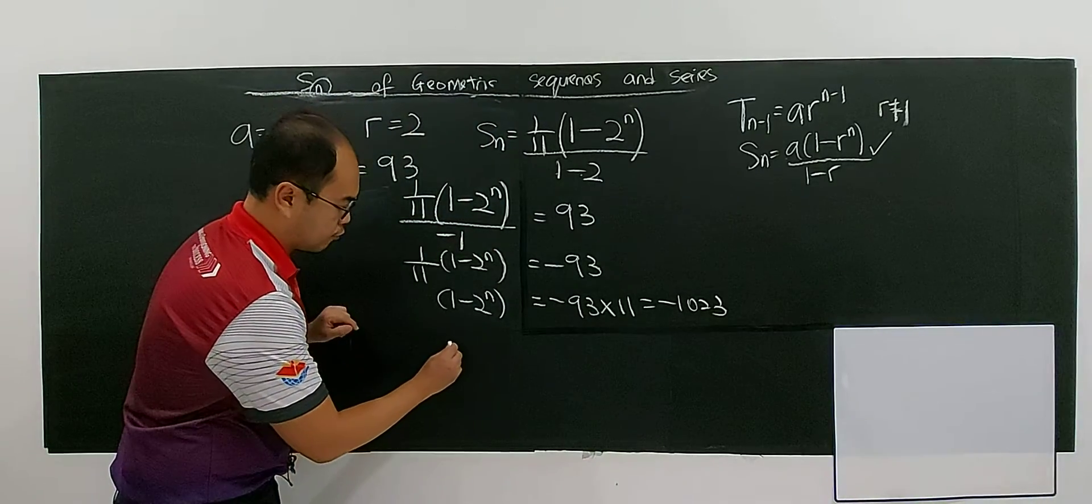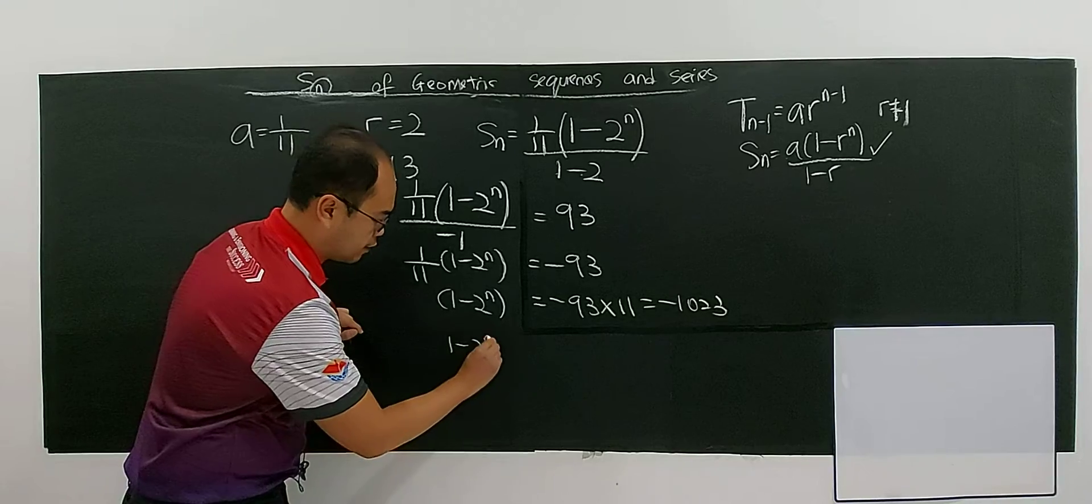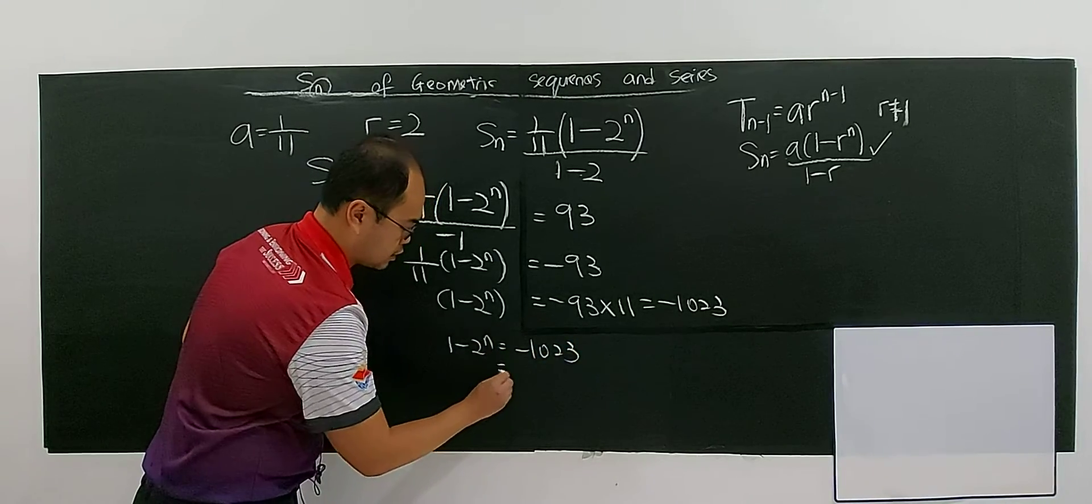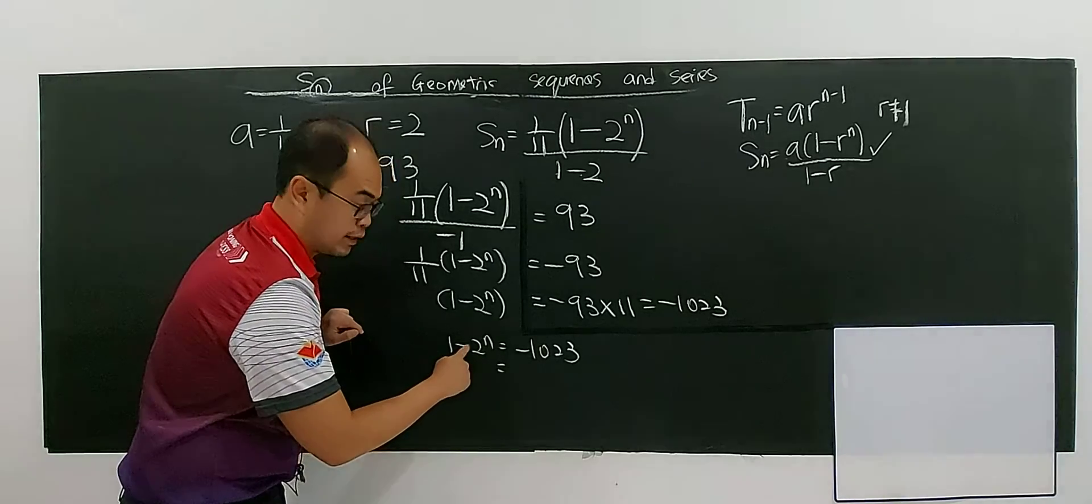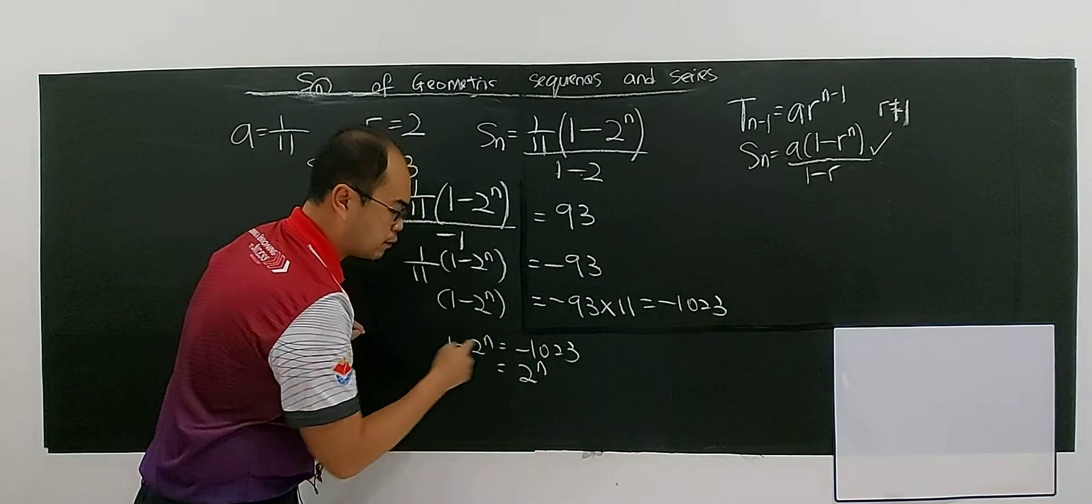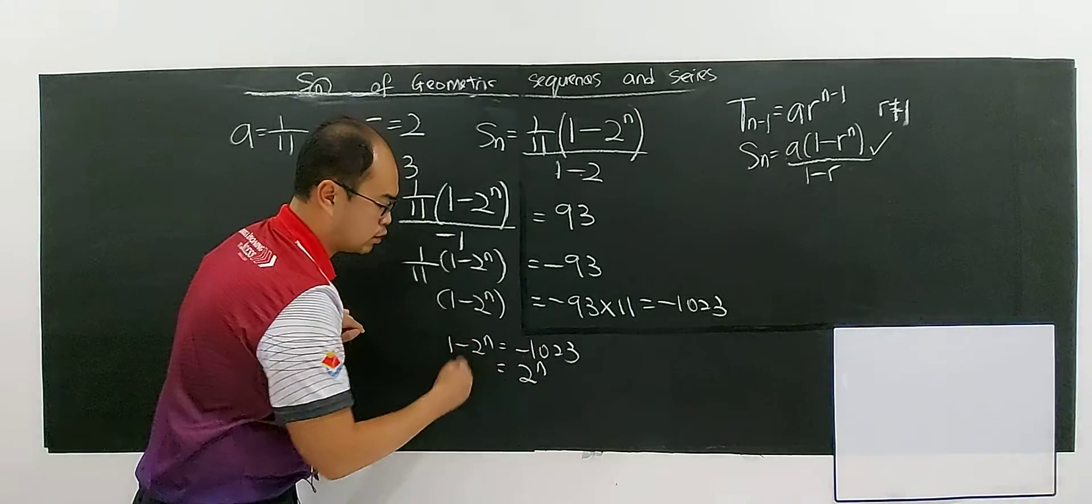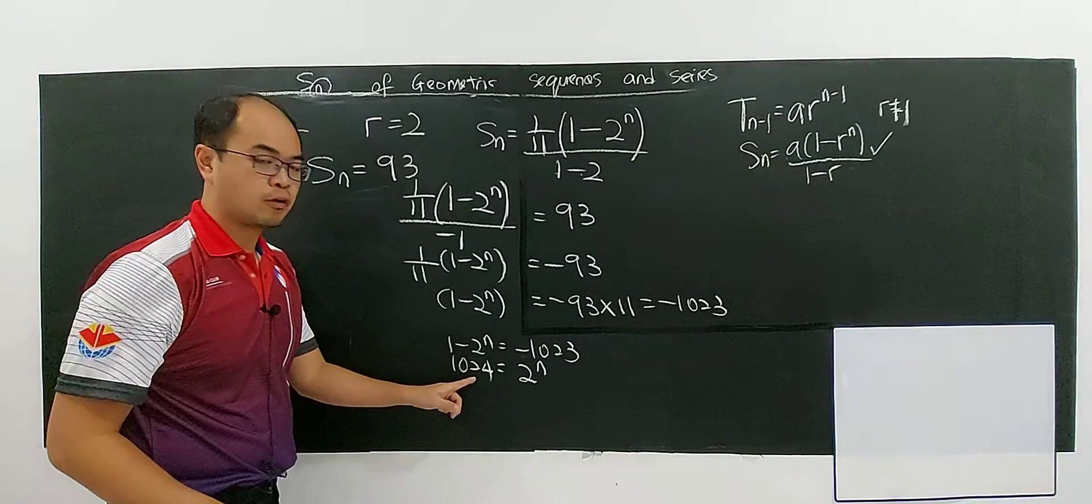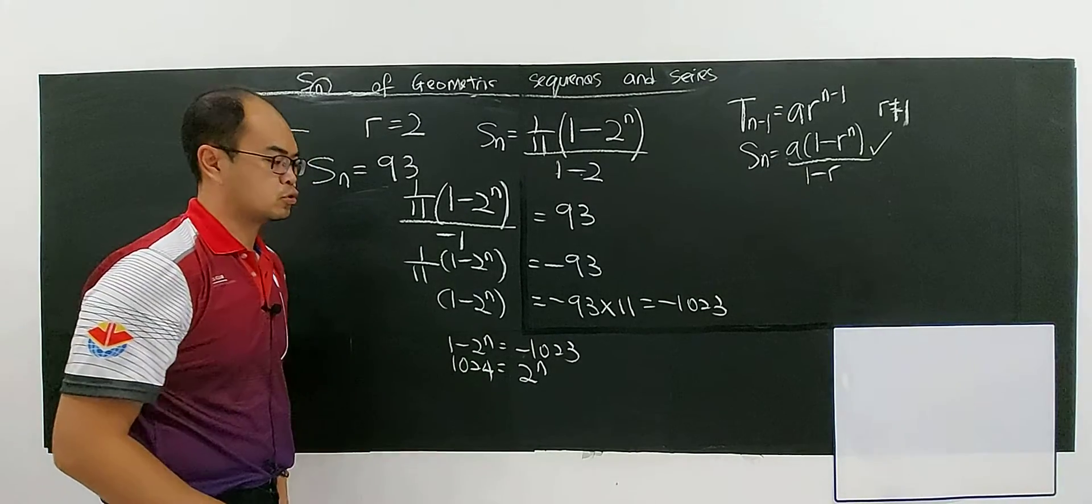So then you have (1 - 2^N) equals negative 1023. So it's easier for me to make this positive. Negative 2^N becomes 2^N, and 1 negative 1023 becomes 1024. So 2^N equals 1024, having the base 2 also.